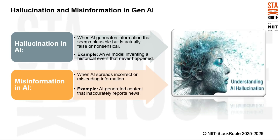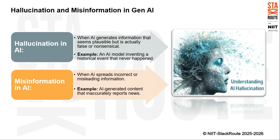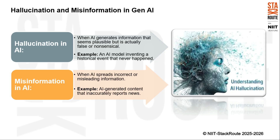Hallucination in AI occurs when the AI generates information that seems plausible but is actually false or nonsensical. For instance, an AI model might invent a historical event — such as a war or a treaty — which sounds believable but is entirely fictional. Similarly, misinformation in AI refers to the spread of incorrect or misleading information by the AI, such as producing a news article that incorrectly states details about a current event, leading people to believe and act on false information, which can have serious consequences.